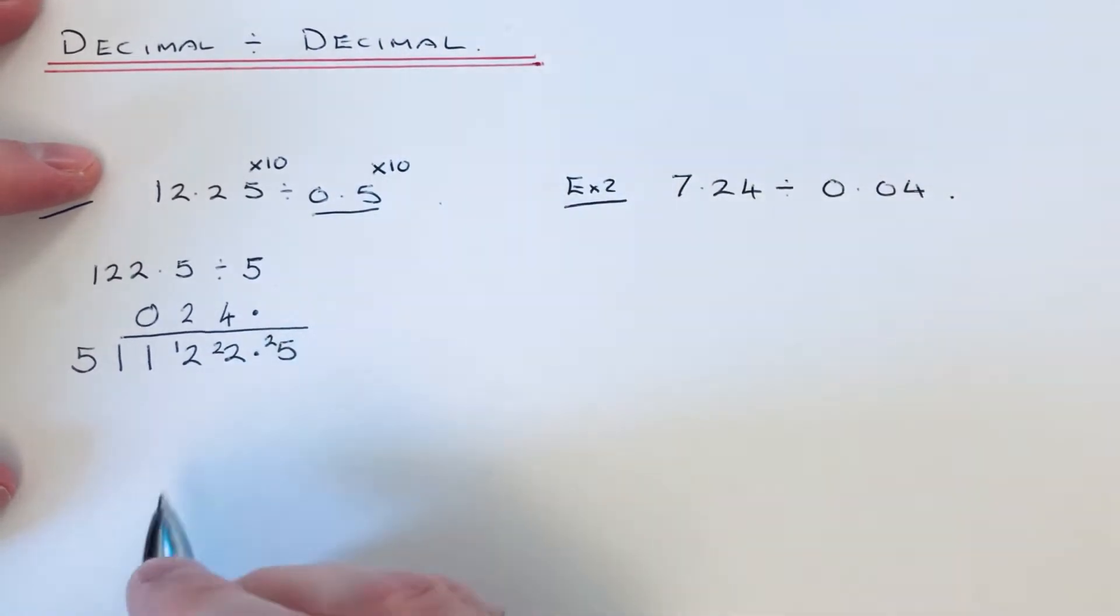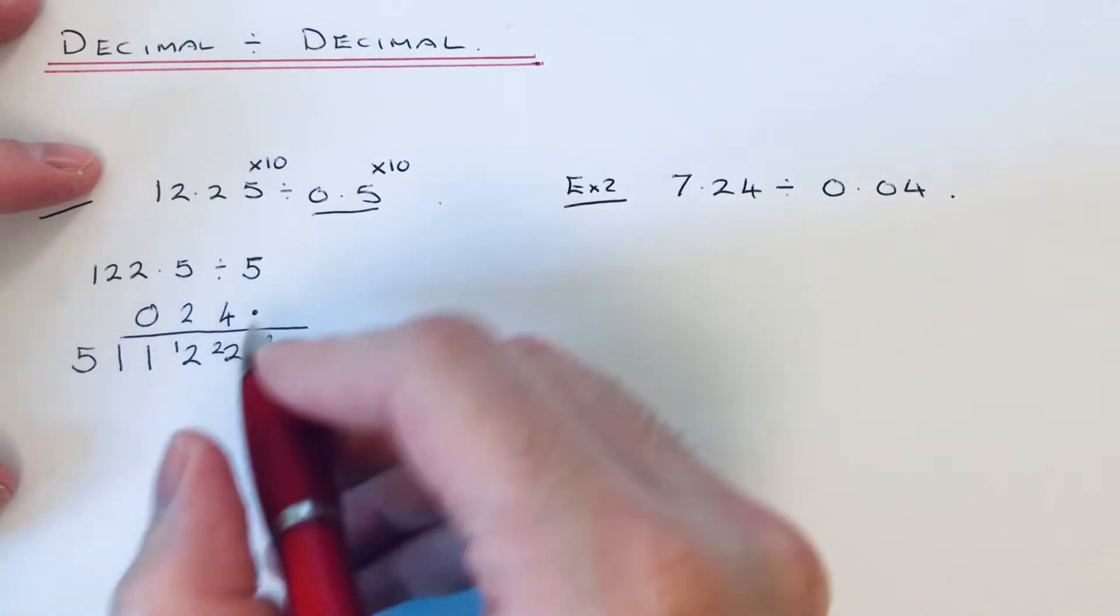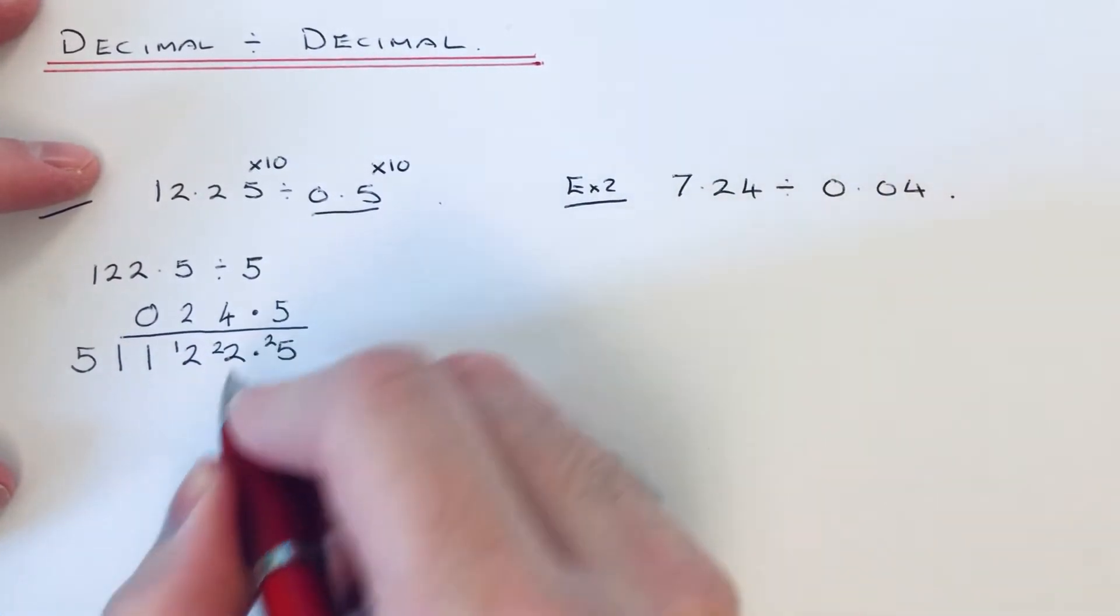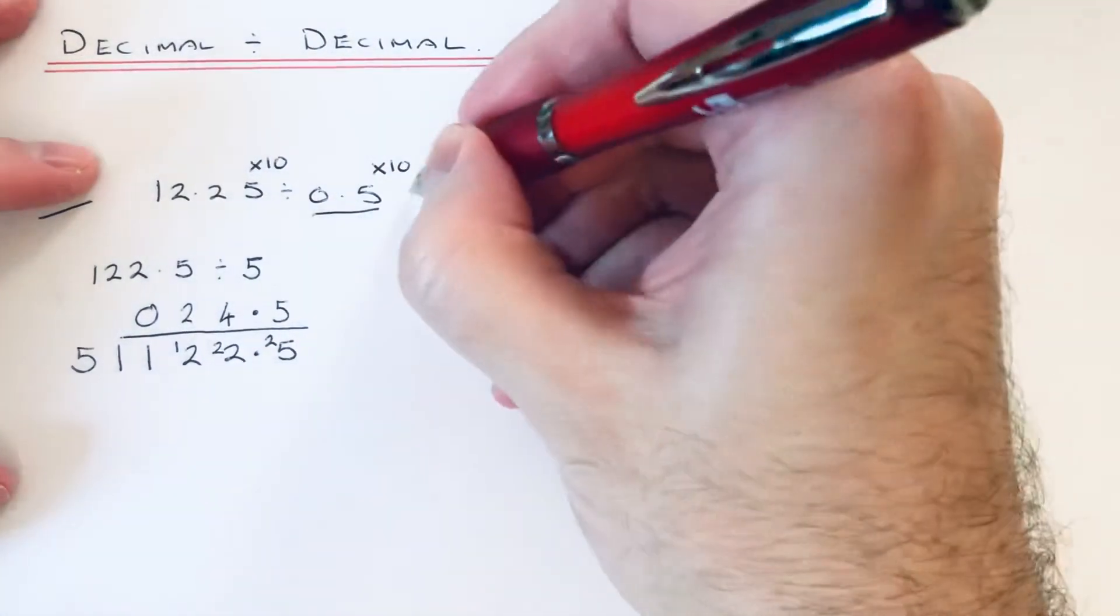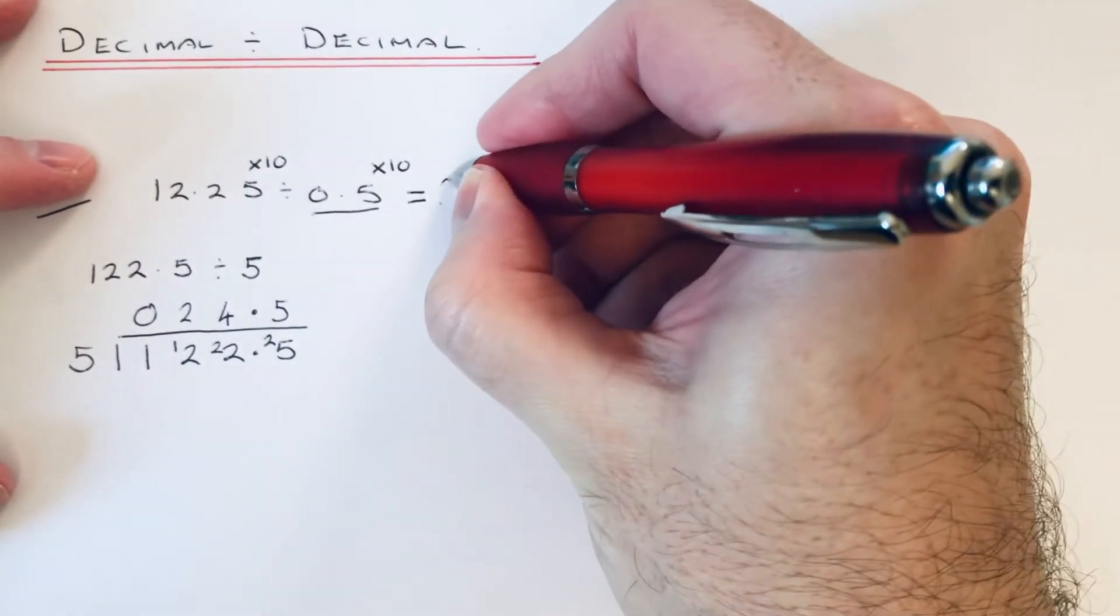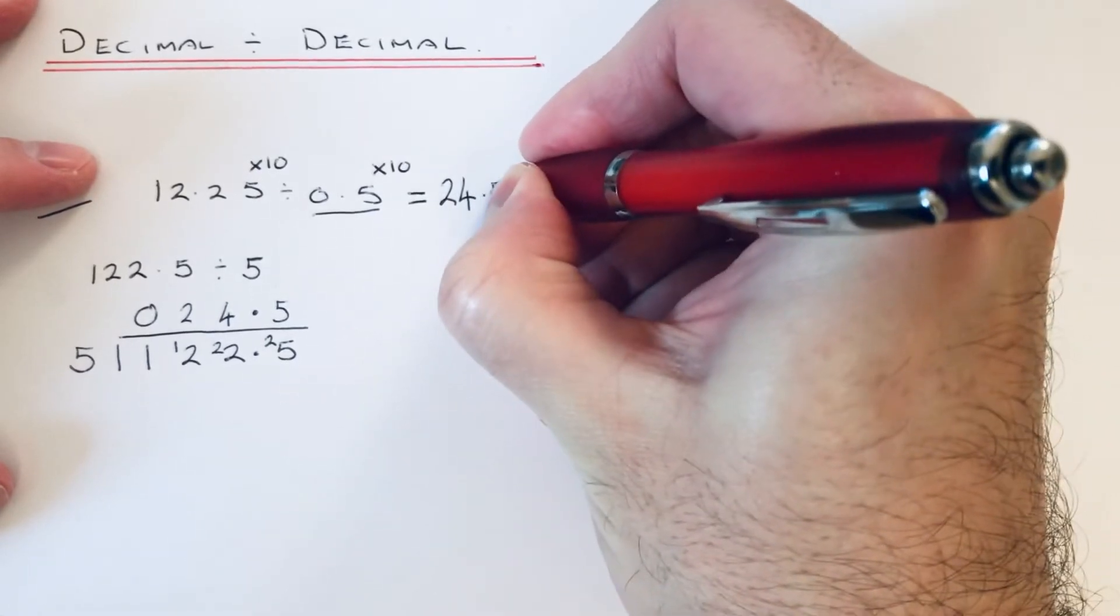Keep the decimal point in line. 25 divided by 5 is 5. So that is our answer. We don't need to do anything else with it. The answer is 24.5.